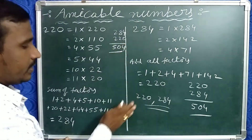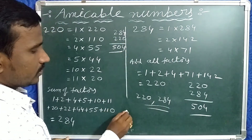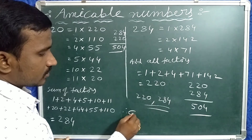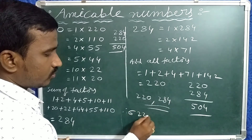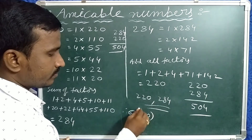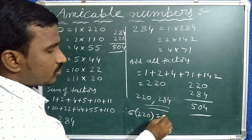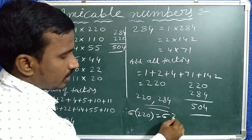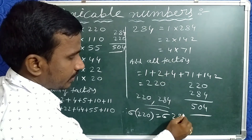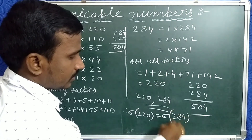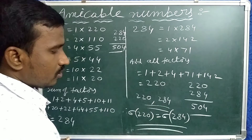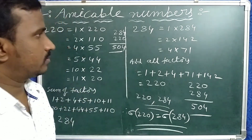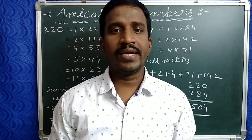Therefore, we write: ρ(220) = ρ(284). That is why these two numbers are called amicable numbers.